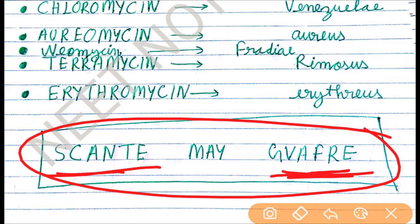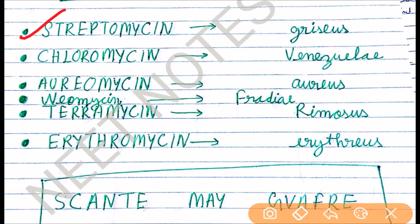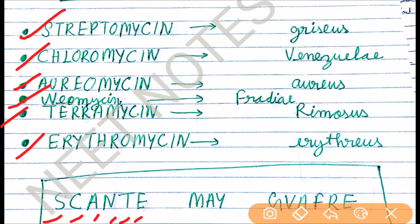With the help of 'SCANTY' you can remember all the antibiotics. S for Chloromycin, C for Chloromycin, A for Aureomycin, N for Neomycin, T for Terramycin, and Y for Erythromycin.